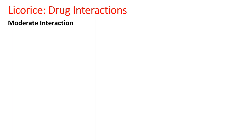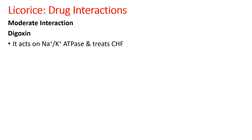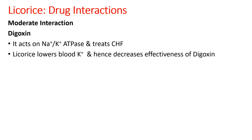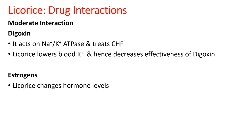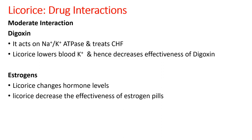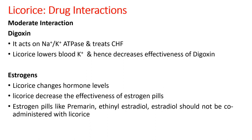Other moderate interactions are found with digoxin, which directly acts on the sodium-potassium ATPase pump and treats congestive heart failure. But since liquorice lowers the potassium level, it also decreases the effectiveness of digoxin — digoxin does not find sufficient potassium in the blood to treat CHF. With estrogens, liquorice changes the sex hormone level in the body and decreases the effectiveness of certain estrogen pills — such as Premarin, ethinyl estradiol, or estradiol — used as contraceptive drugs.